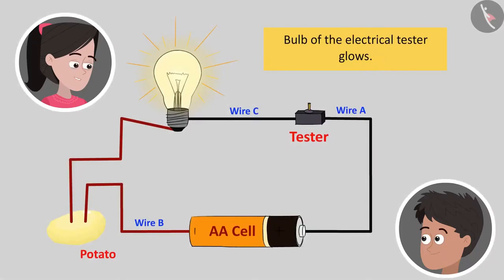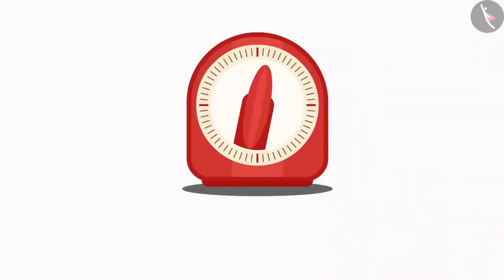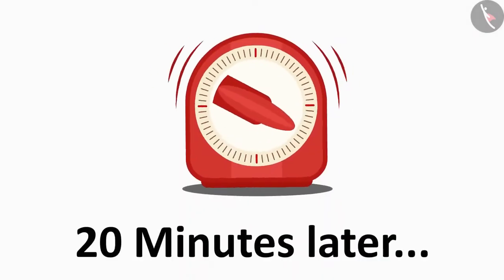Now insert the two loose ends of the wires about an inch apart into the potato piece. Yes, yet again, the bulb of the electrical tester lights up. Yes, this is because this circuit is complete. But wait for about 20 minutes and then observe the potato piece.